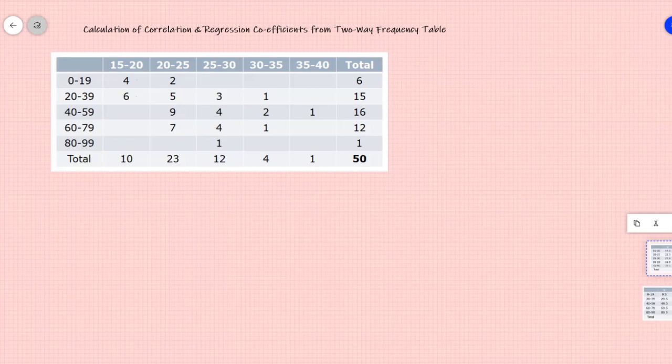Hello, today let's look at how we can calculate correlation and regression coefficient from a two-way frequency table where two variables are like x and y. It's a very easy process. I will try to simplify it step by step so that you can clearly understand.